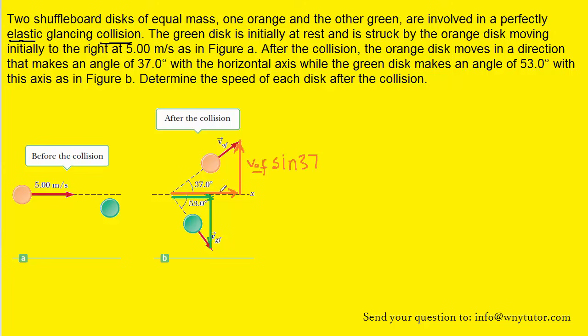The x direction can be labeled v naught f cosine of 37, so perhaps we can squeeze that in over here. Now in a similar way we can label the x and y components of the green disk. Notice the question labeled the final velocity of the green disk as v sub gf, so the x component of the final velocity of the green disk is going to be v sub gf cosine of 53, and the y component will be v sub gf sine of 53.